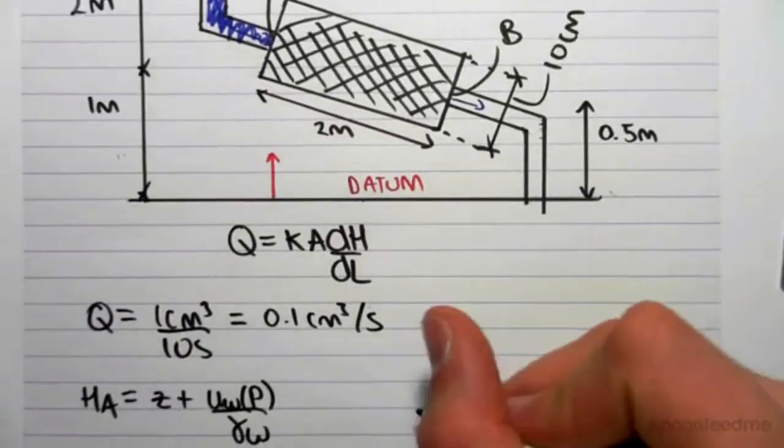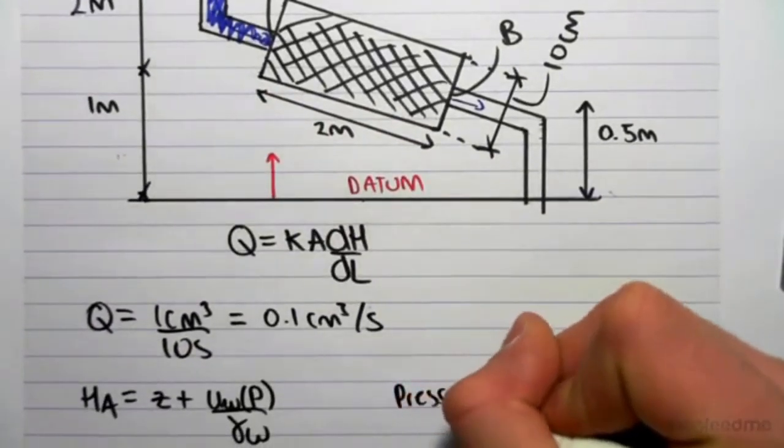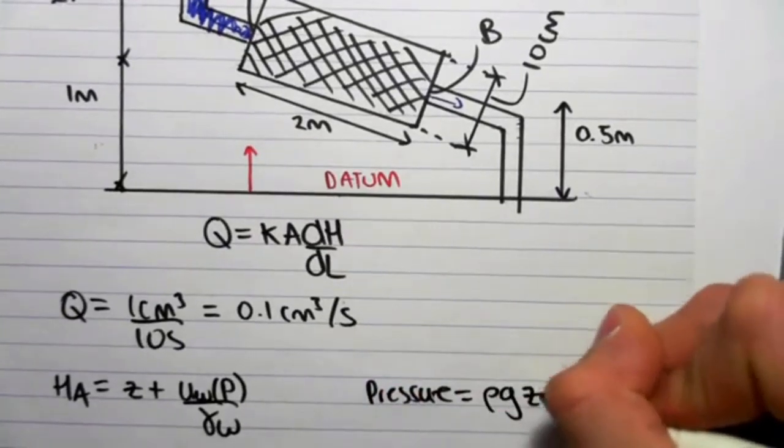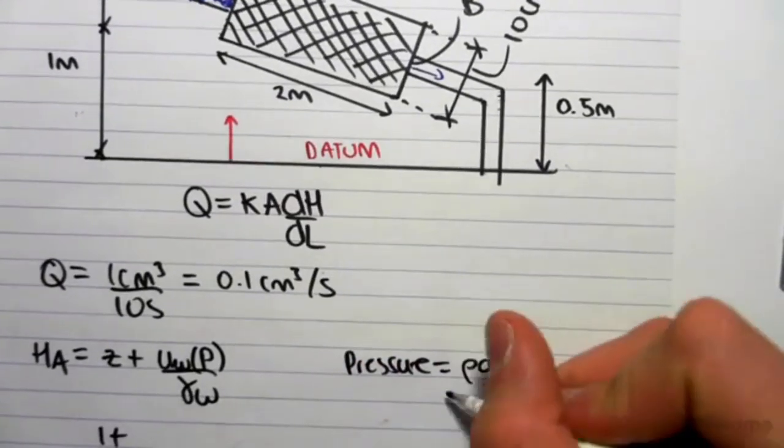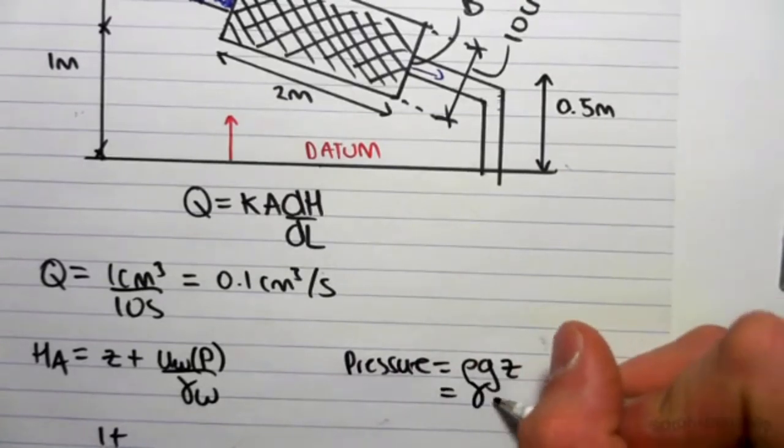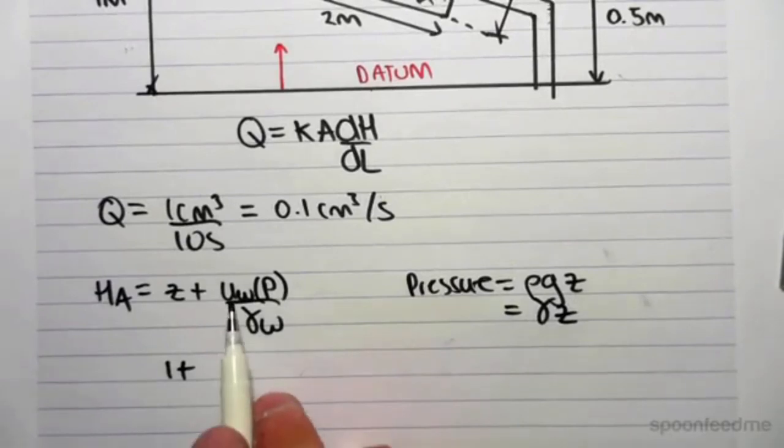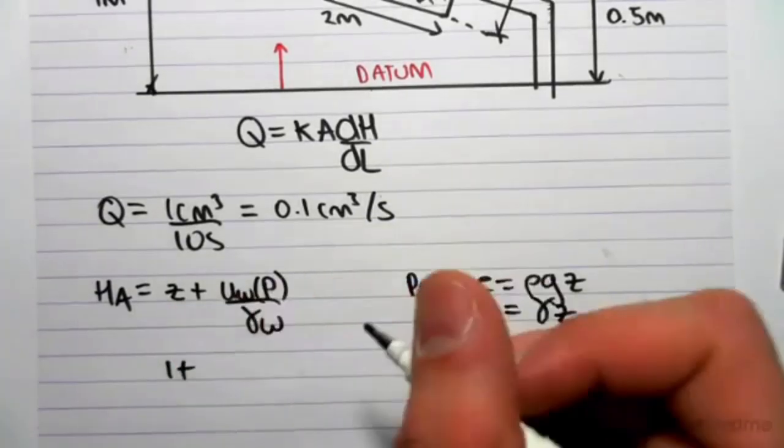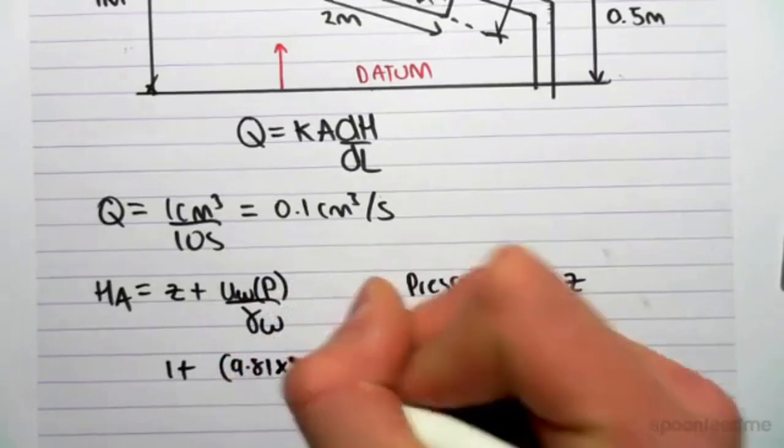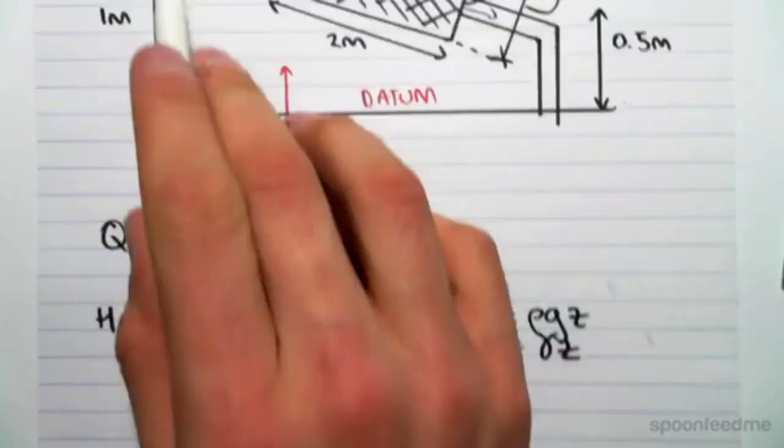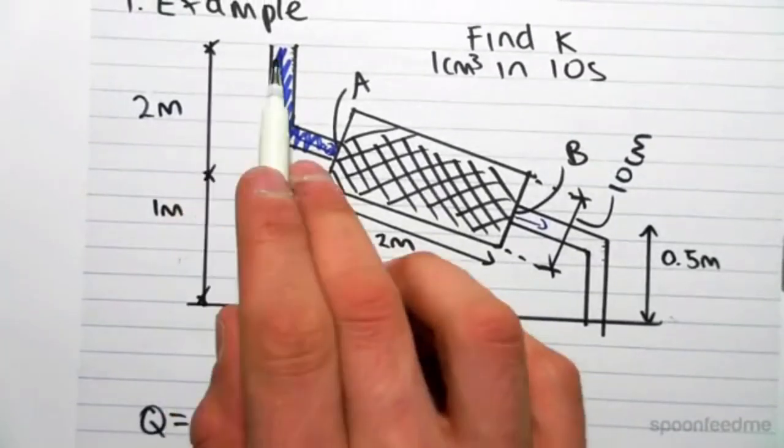Now we know that pressure equals rho gz. So that's hydrostatic pressure, which is the same as gamma z. So in our case, the pore water pressure would be gamma z, which is 9.81 times by the depth. So we're 2 m down from the top.